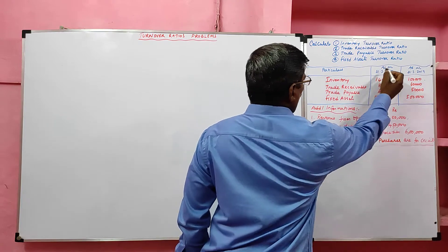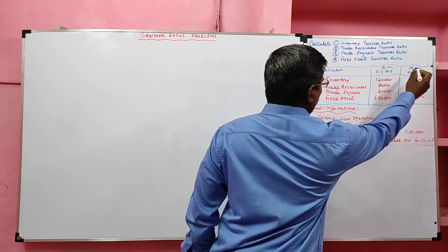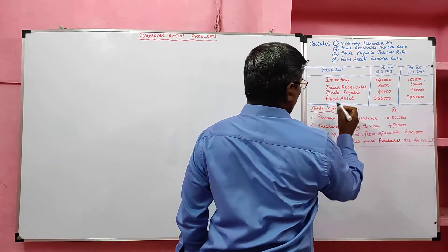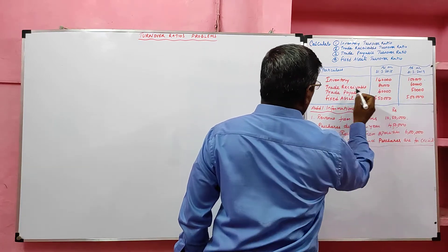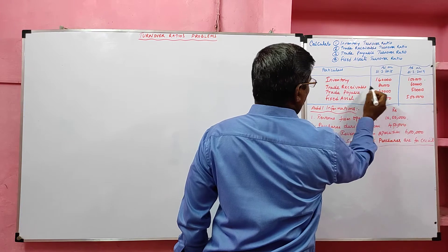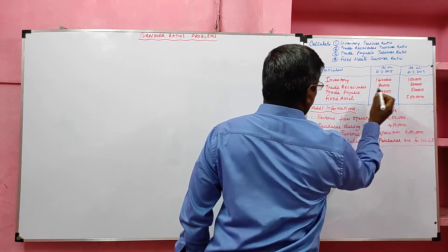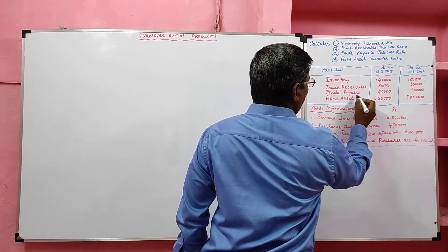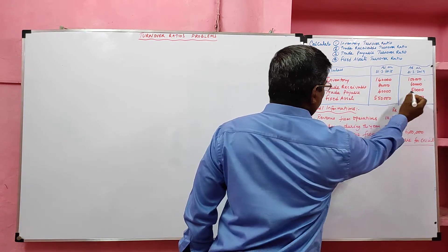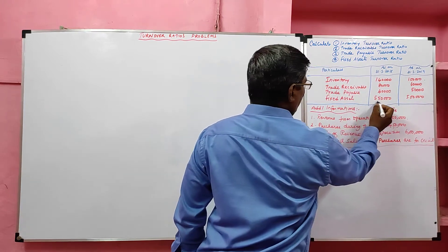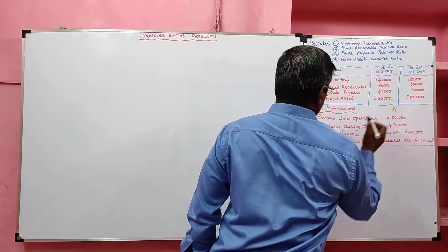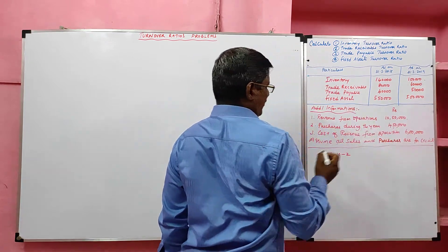Particulars — opening balances and closing balances are given: inventory opening and closing, trade receivable opening and closing, trade payable opening and closing balances, and fixed asset opening and closing balances are given.